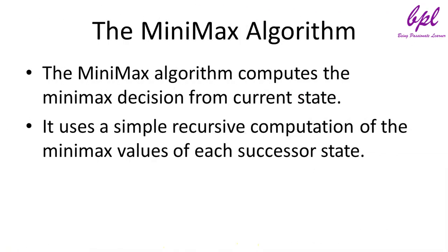The minimax algorithm computes the minimax decision from the current state. It uses a simple recursive computation of the minimax values of each successor state, directly implementing the defining equation. The recursion proceeds all the way down to the leaves of the tree, and then the minimax values are backed up through the tree as the recursion unwinds.